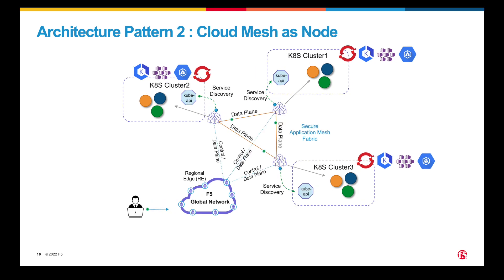If Cloud Mesh as Pod doesn't meet your requirements, you can deploy Cloud Mesh as Node. You can deploy Cloud Mesh as a virtual machine or bare metal that sits outside your Kubernetes cluster. It acts as a secure Kubernetes ingress gateway to the applications residing inside your Kubernetes cluster. Cloud Mesh node will perform service discovery via the Kubernetes Kube API to monitor pod lifecycle. You will need to create a service account to be loaded onto Cloud Mesh so that it can perform service discovery against the Kube API. Similar to Architecture Pattern 1, a secure application mesh fabric will be established among Cloud Mesh nodes. All security capabilities from Pattern 1 apply here as well. In this pattern, you can also leverage the Cloud Mesh node as an egress gateway. This pattern is potentially suitable for NetSecOps or NetOps, where management and lifecycle of the mesh node are within the NetOps team. Please refer to documentation for further details on the pros and cons.